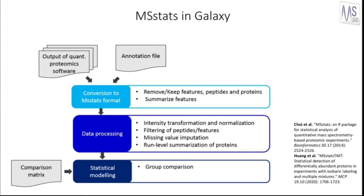MSstats in Galaxy needs three different types of inputs. First, the results from a quantitative proteomic software, for example MaxQuant or OpenMS. Second, an annotation file that specifies biological and technical replicates as well as the conditions of interest. Third, a comparison matrix that specifies which conditions should be compared. Based on the annotation file and comparison matrix, MSstats automatically chooses the right linear model to fit.